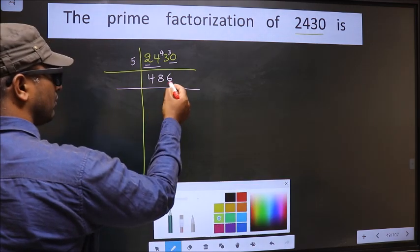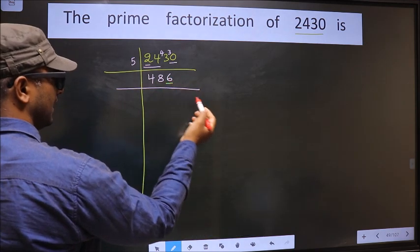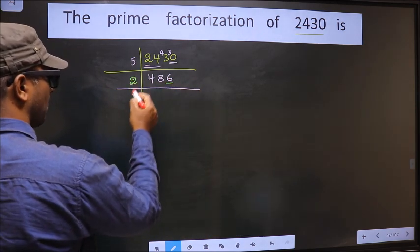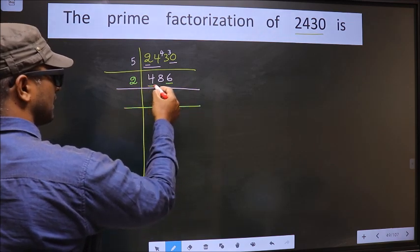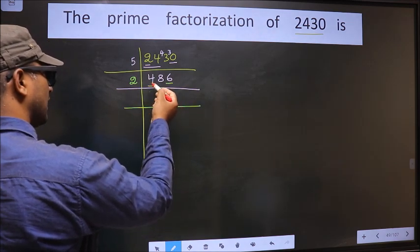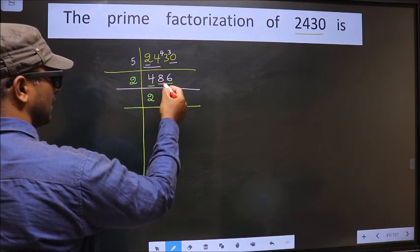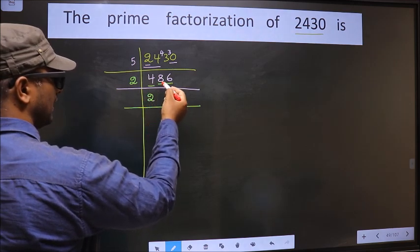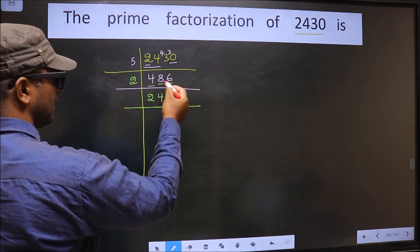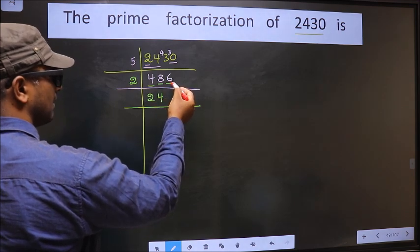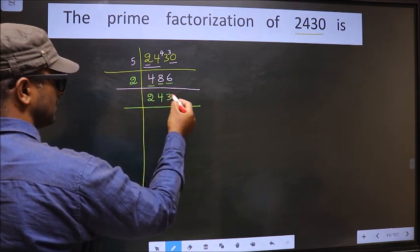Now for this number, the last digit is 6, which is even, so we take 2 here. The first number is 4. When do we get 4 in the 2 table? 2 twos 4. The next number is 8. When do we get 8 in the 2 table? 2 fours 8. The next number is 6. When do we get 6 in the 2 table? 2 threes 6.